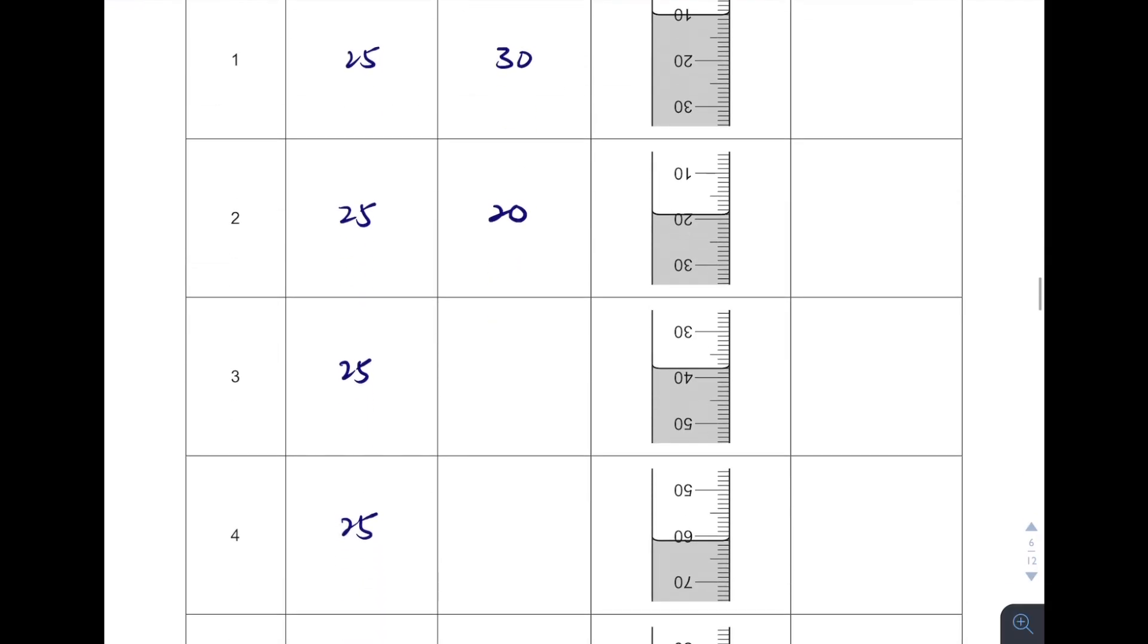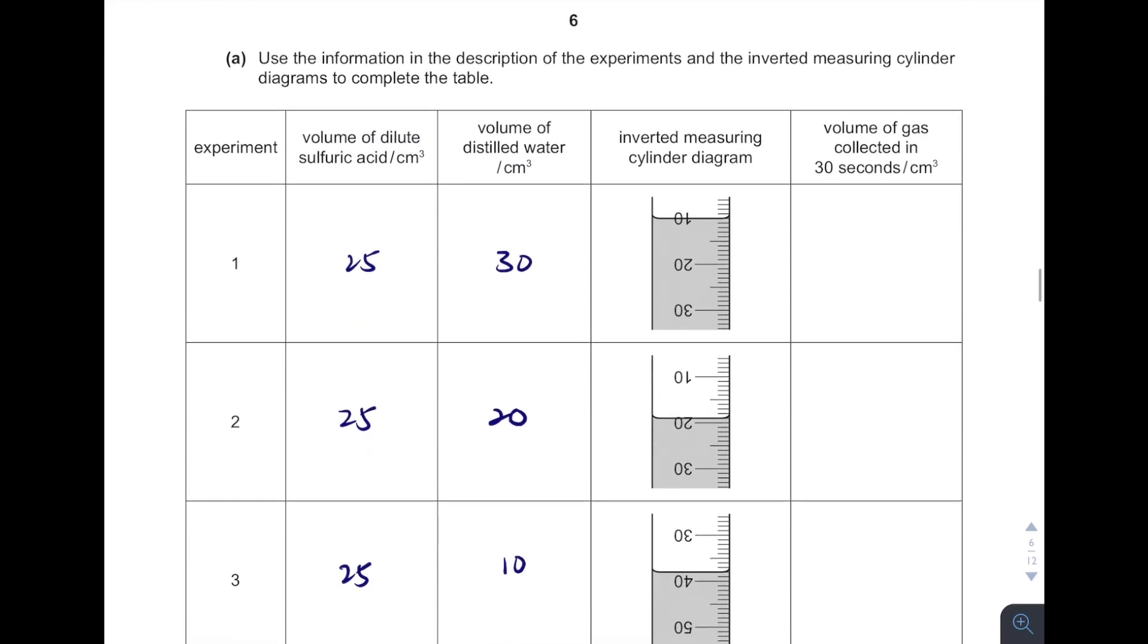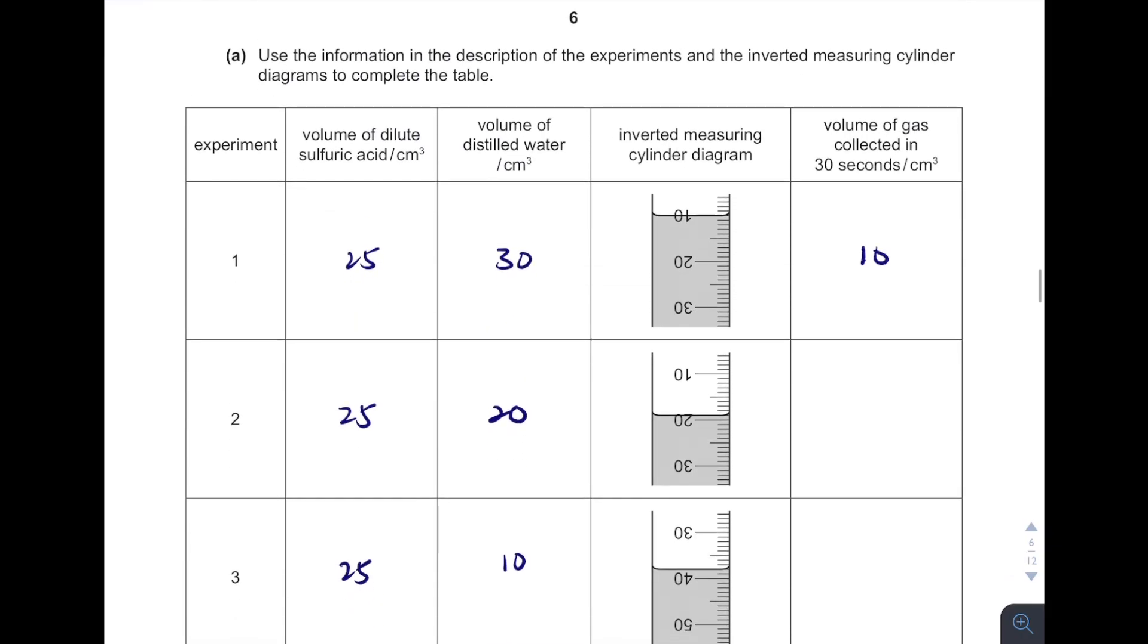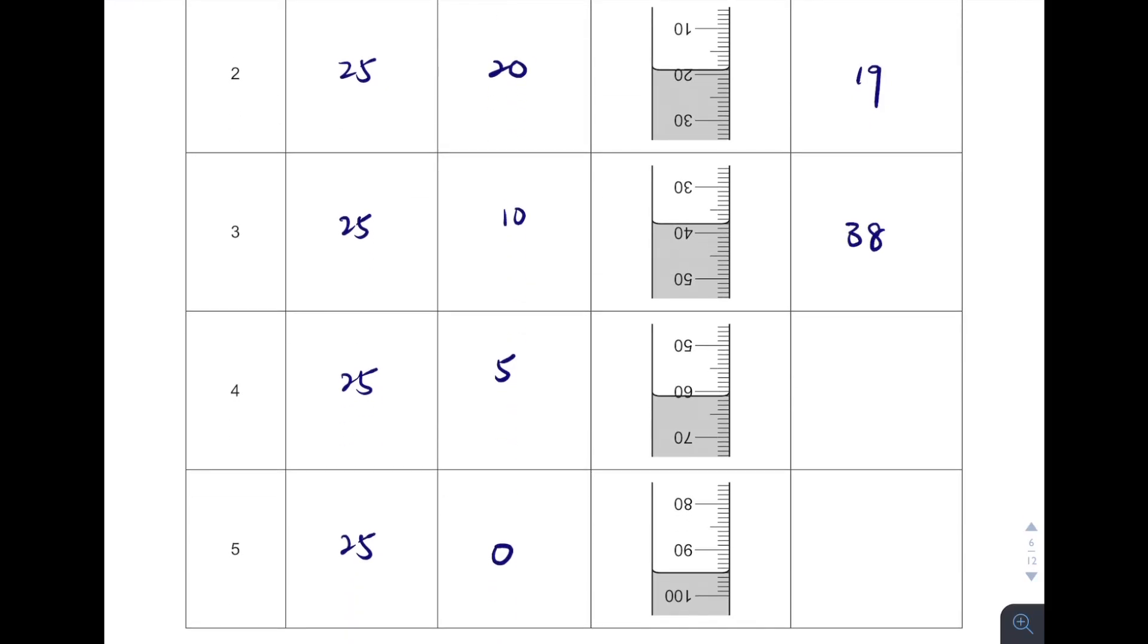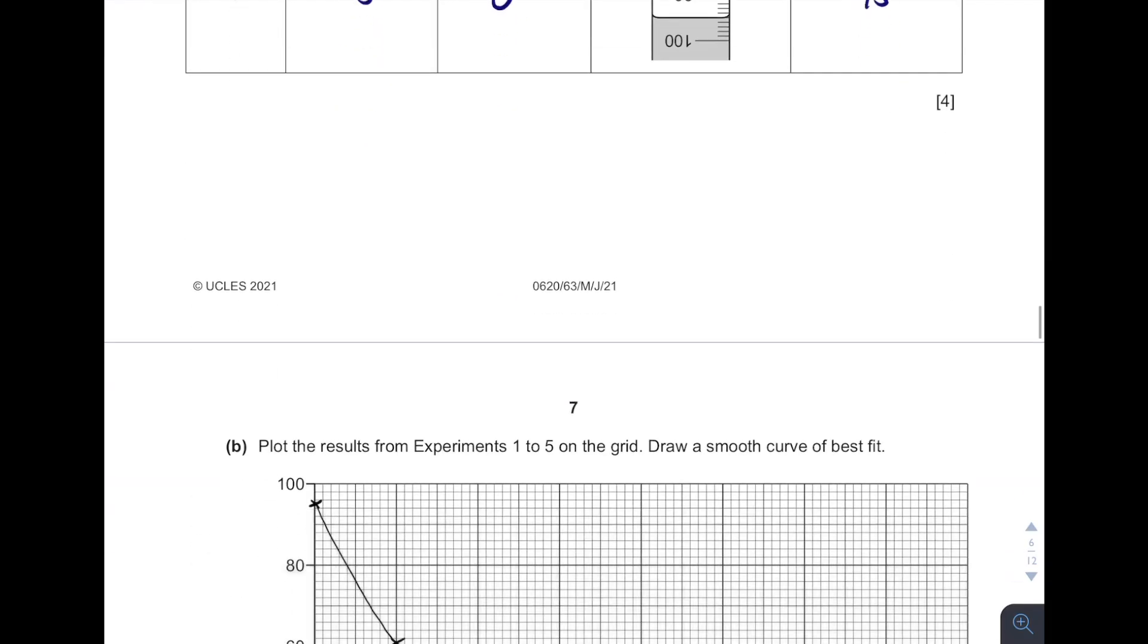And then volumes of gas collected. So this one we know is 10, 19, 38, 61, and this it would be 95. That's it. One more thing you remember, when it comes into tabulations of data, you have to make sure they can all the readings have the same decimal place.